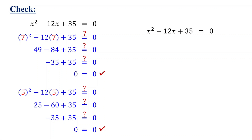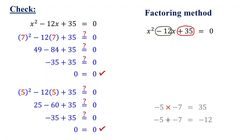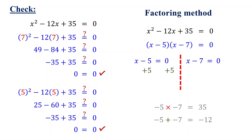We can actually solve this quadratic equation more easily using the factoring method, as it is simple to find two numbers that multiply to give 35 and add up to negative 12. These numbers are negative 5 and negative 7. So when we factor this quadratic equation, it becomes x minus 5 times x minus 7, which equals 0. Setting each factor equal to 0 and solving for x gives us the solutions. However, not every quadratic equation can be factored, but all can be solved using the quadratic formula.